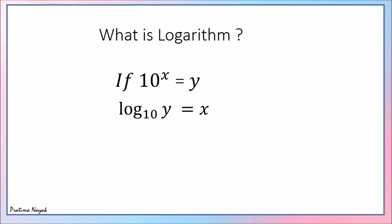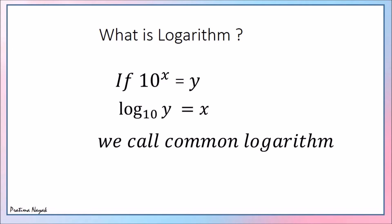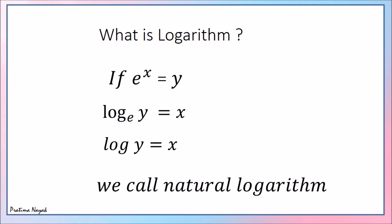Similarly, if 10 raised to the power x is y, then we write log base 10 of y equals x. We call this common logarithm — when we take logarithm to base 10. We use this for calculation in physics and chemistry using logarithm tables. Now if e to the power x is y, we write log base e of y equals x — we call it natural logarithm. In calculus, the base e may be omitted; it is understood that the base is e, so sometimes you will find log y written without a base.